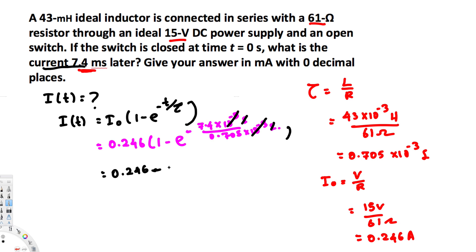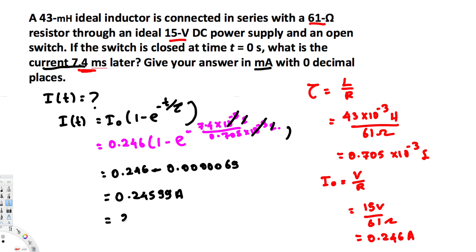Calculating this gives 0.24599 amperes. Since the answer should be in milliamperes with zero decimal places, this is 245.99 milliamperes, which rounds to approximately 246 milliamperes. That's the final answer.